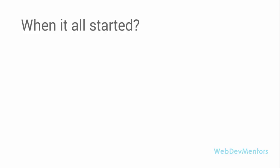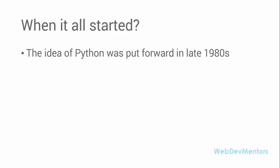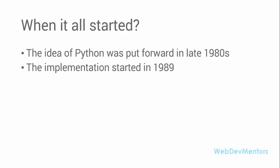Let's begin with when it all started for Python. The idea of Python was put forward in the late 1980s — something around 30 years back. The implementation started in 1989, around December of that year, and Python was published in 1991. So it took two years to get a completed Python ready to be published.